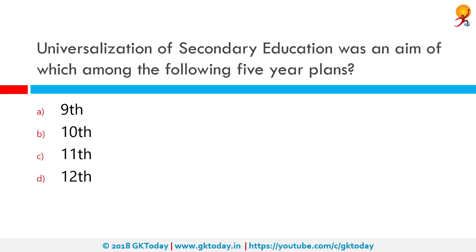Universalization of secondary education was an aim of which among the following five-year plans? It needs to fulfill three major criteria: universal enrollment in the ninth and tenth grades, universal retention achieving zero dropout rates, and universal performance with successful completion by all enrolled. It was taken up in the Eleventh Five-Year Plan between 2007 and 2011.